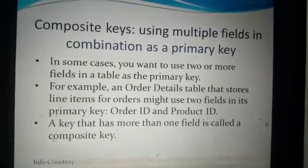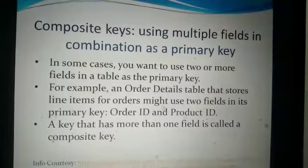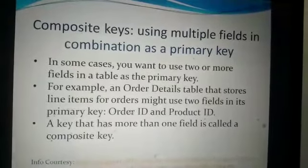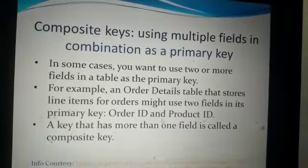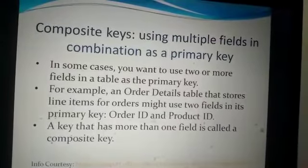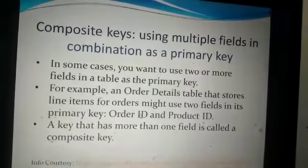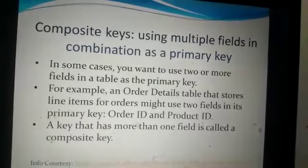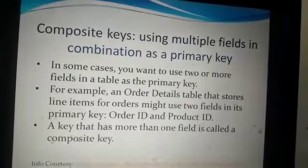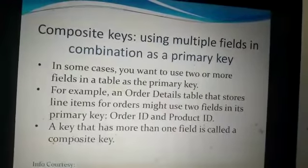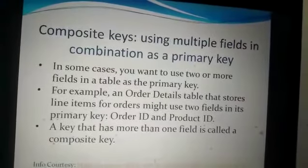Composite keys consist of a combination of two or more fields. For example, you can take the order ID field and the product ID field — their combination will make one primary key. Because orders can be different and product IDs can be different, but one combination will always remain unique. A composite key is a combination of fields.